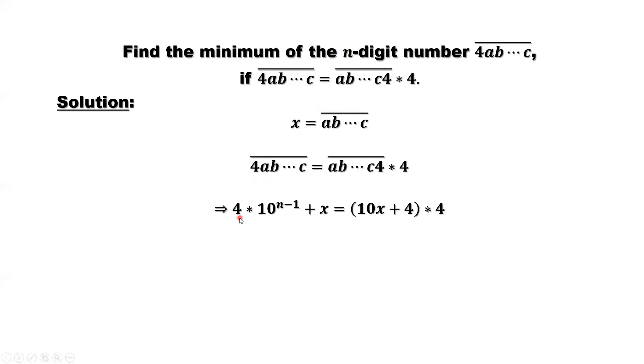From the given condition, we can rewrite this in terms of X. The left-hand side is 4 × 10^(n-1) + X. The second part is X, first part is 4. After 4, how many zeros? n-1 zeros. So two pieces: 4 × 10^(n-1) + X. Right-hand side, we can see 4 is the one's digit, and we shift A, B, until C to the right by one more digit. So it should be X × 10, starting from the 10th digit, plus 4.